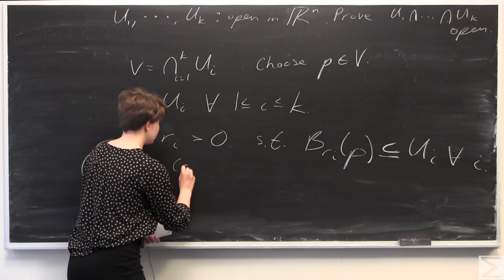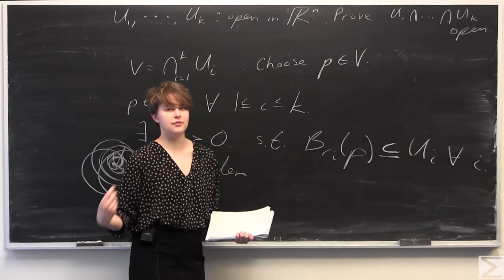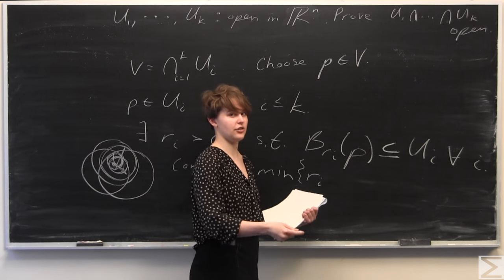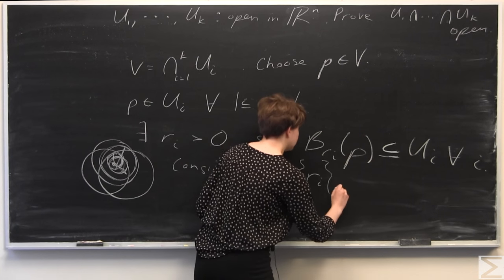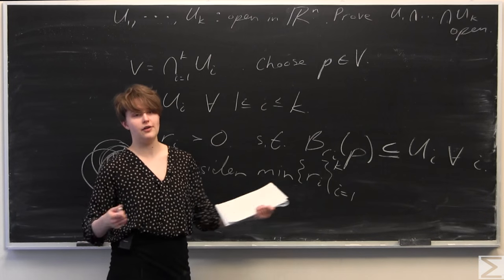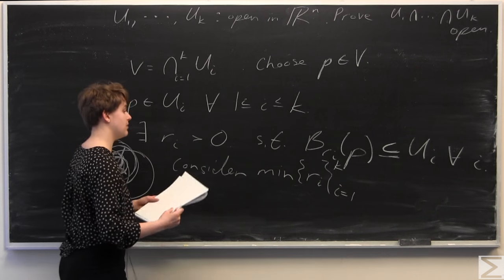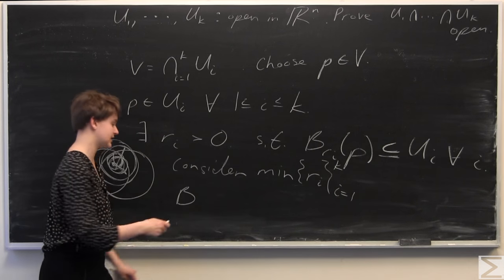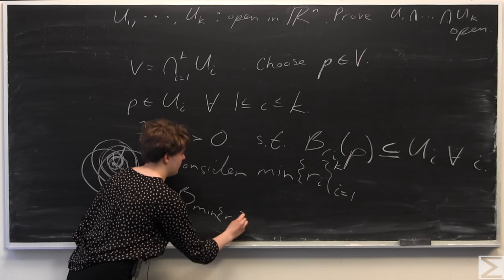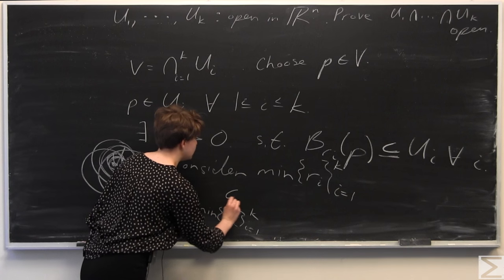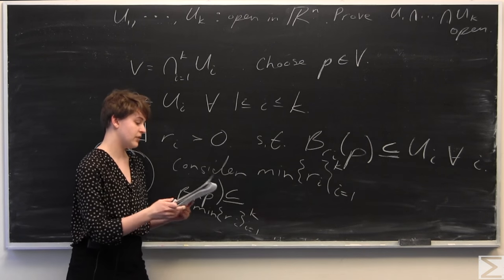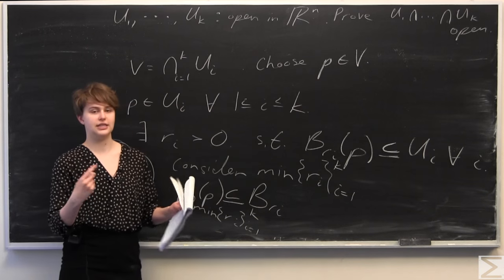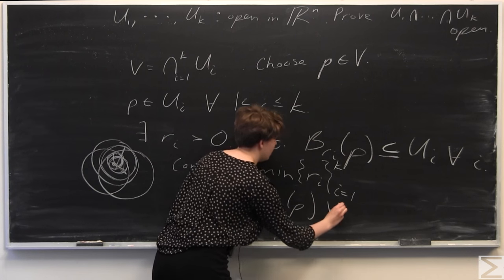We're now going to consider the minimum of all these radii — the smallest. We can look at these radii as a set: from i equals 1 to k, we consider the minimum of all those radii, and we know that the ball of this minimum radius — the smallest ball — is contained in each open set. So the ball of the minimum radius, from i equals 1 to k, centered around p, is completely contained within all of the balls of radius ri around p, for all i.